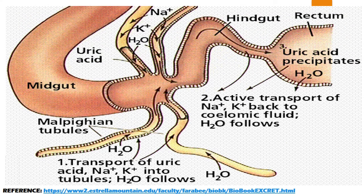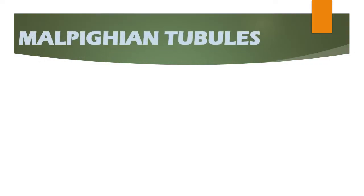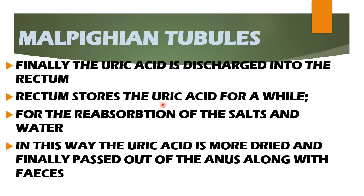Looking at the diagram again: these are the Malpighian tubules. Finally, uric acid — the excretory product — is discharged into the rectum. The rectum stores uric acid for a while for the reabsorption of salts and water. This reabsorption of salts is the osmoregulatory function for dry conditions. Salts and water are reabsorbed from the rectum back into the hemolymph, because the insect lives in dry conditions. In this way, uric acid becomes dry and finally passes out of the anus along with the faeces.